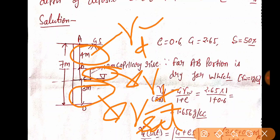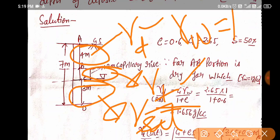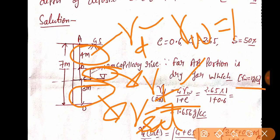So first of all, we will try to find this value — gamma d. Gamma d is equal to G·γw / (1 + e). And see, the whole question is in ton per meter terms. The gamma w value I have used is equal to 1 gram per cc.